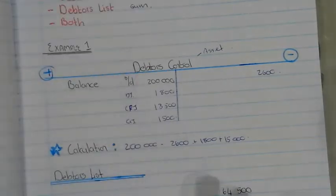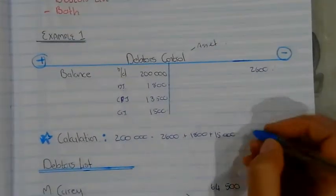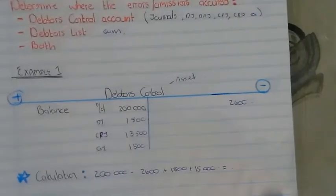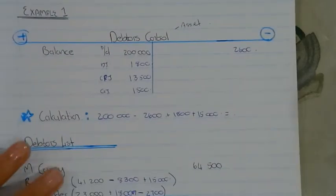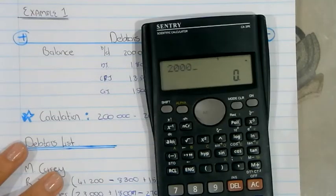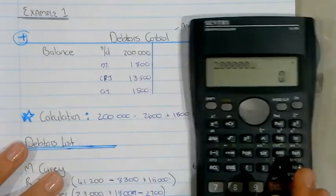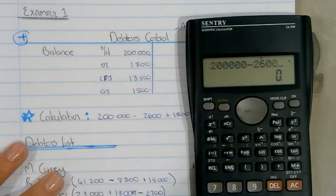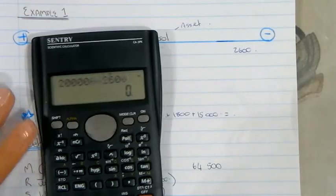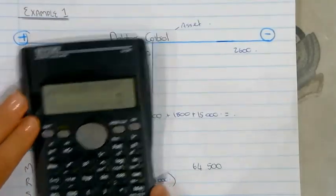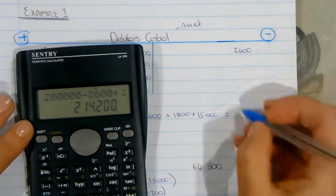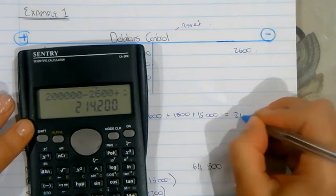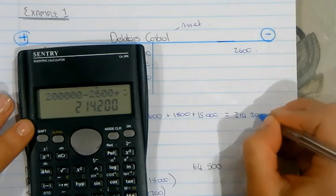Now let's check if our debtors control balance is the same as our debtors list. For the debtors control: 200,000 minus 2600 plus 1800 plus 15,000 gives a total of 214,200.